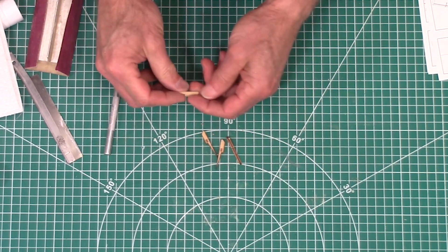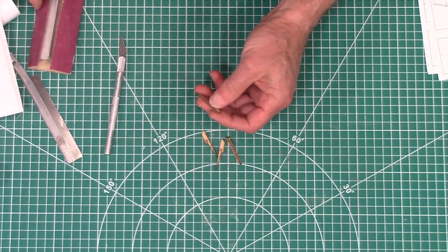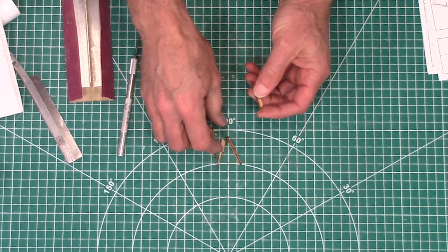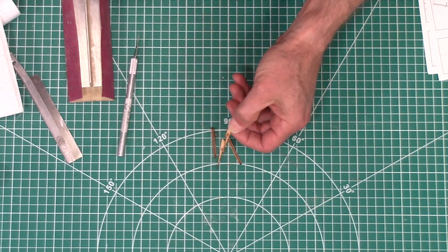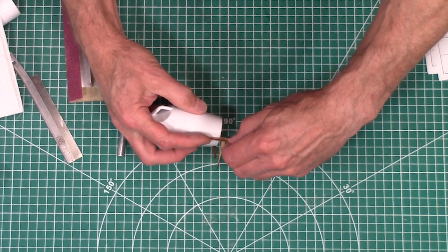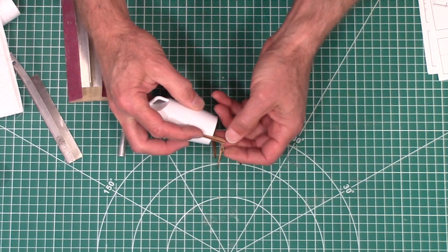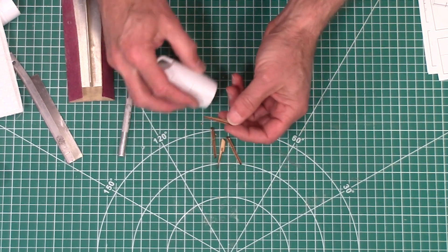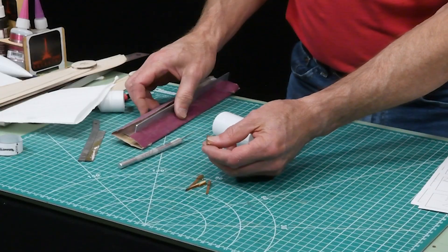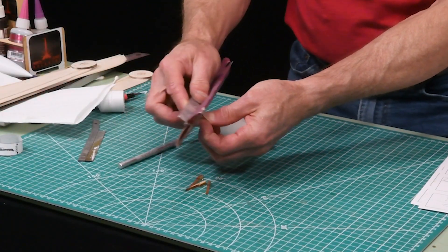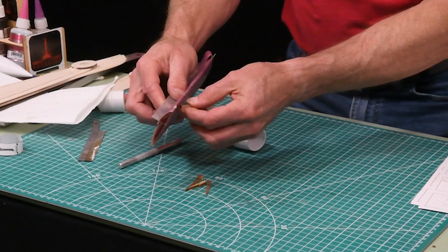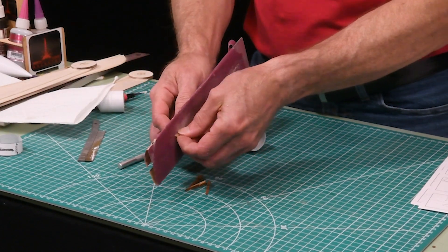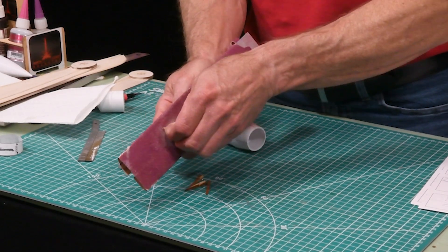Okay we're going to sand these just a little bit. This edge here is going to be glued on to the bow tail like that. And I want to just sand this outside edge. Just clean it up a little bit. And in fact I'm going to sand the edges as well.